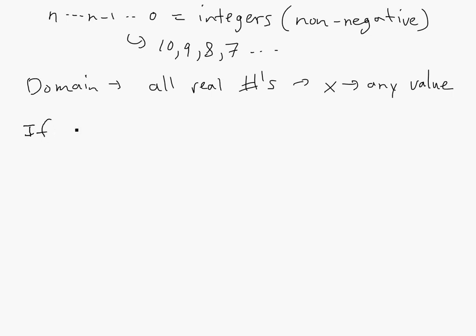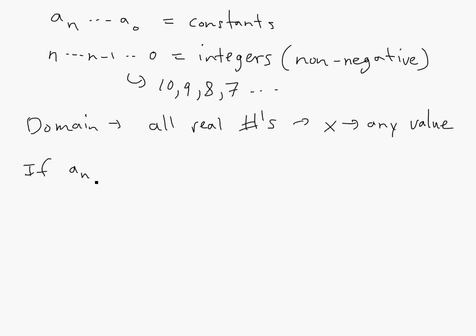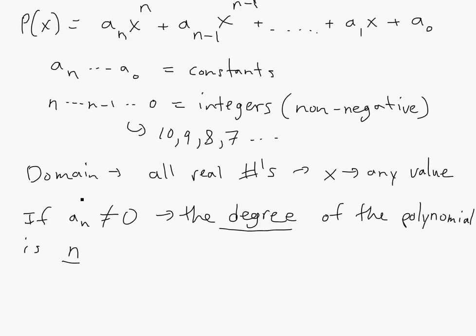So if, let's say, if a_n, the leading constant or coefficient, is not equal to 0, then the degree is just n. We call this the degree of the polynomial, is n.